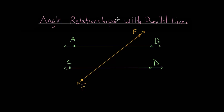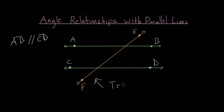In this video I'd like to talk about the relationships between the angles of parallel lines. We have two lines AB and CD that are parallel, meaning if you extend them indefinitely they will never cross each other. This line EF is what we refer to as a transversal — the line that cuts two parallel lines. The transversal intersects both lines and many different angles are formed at each of these intersections.